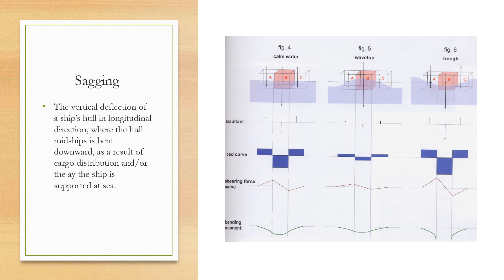Similarly, sagging is seen in figures four, five, and six — and also in figure three — where there is more weight in the middle part. Sagging is the vertical deflection of a ship's hull in the longitudinal direction where the hull midships is bent downwards, because of extra weight in the midship section. It results from cargo distribution and/or the way the ship is supported at sea by the waves acting along the ship's hull.